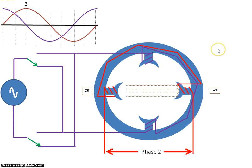So basically, the north pole has moved from there to there to there, and that's in a clockwise direction. So, we can see by reversing the direction of one of the phases, we can change the direction of rotation of the rotor.